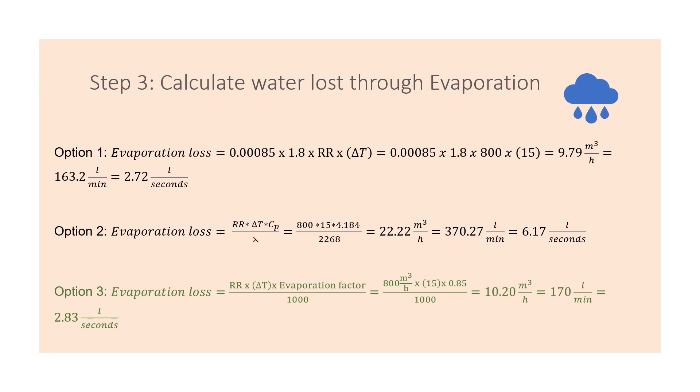Now equation two accounts for the circulation rate, temperature difference, specific heat capacity of water, and its latent heat. If you punch everything into a calculator you should get an answer.